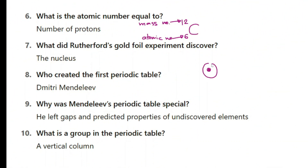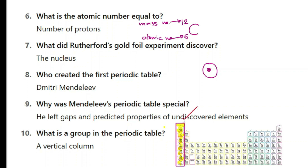Who created the first periodic table? Mendeleev. Why was Mendeleev's periodic table special? Because he left gaps and predicted properties of undiscovered elements. He saw this pattern — all the elements we know now were not discovered at the time — and he said that in the future you might discover some others with certain properties, and he left gaps for them. What is a group in the periodic table? A group is a vertical column.